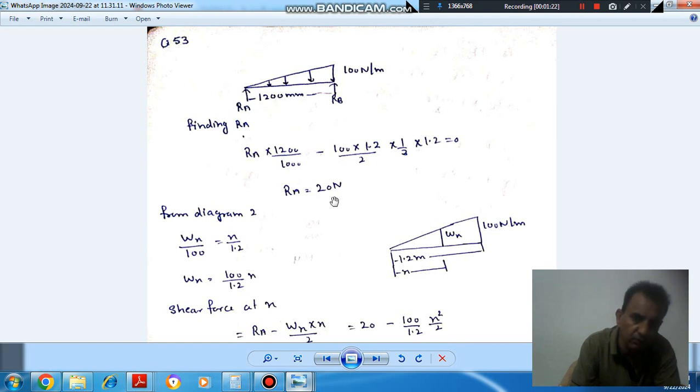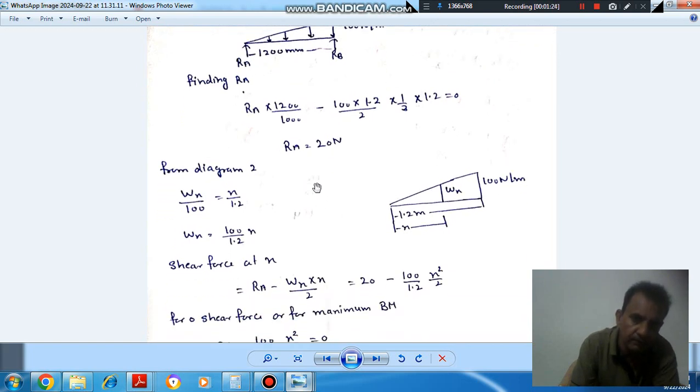Now from this diagram we have this uniform varying moment. At the end it is 100 Nm per meter. So intensity of loading at distance x from this A is wx.